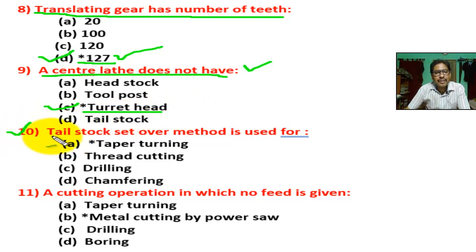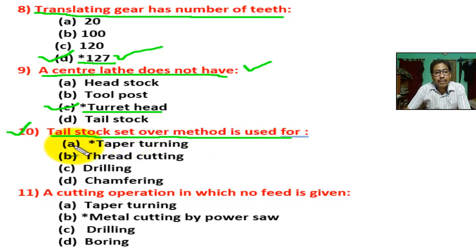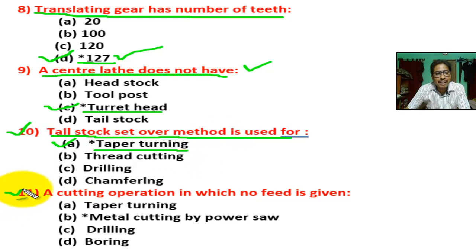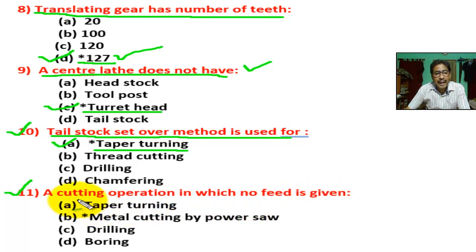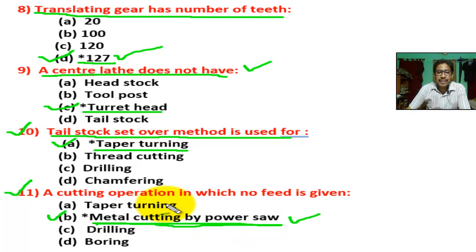Question number ten: the tailstock set-over method is used for taper turning. Correct answer is taper turning — the tailstock offset method is a taper turning method. Question number eleven: a cutting operation in which no feed is given — correct answer is B, metal cutting by power hacksaw. In lathe, cutting operations like taper turning, drilling, and boring all have feed; only power hacksaw has no feed.